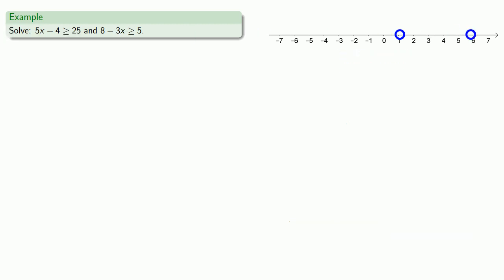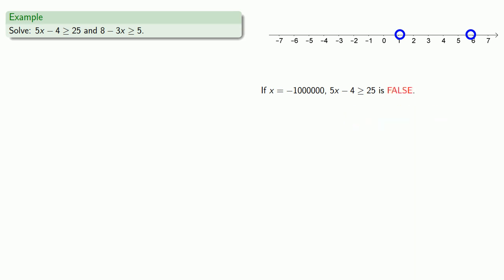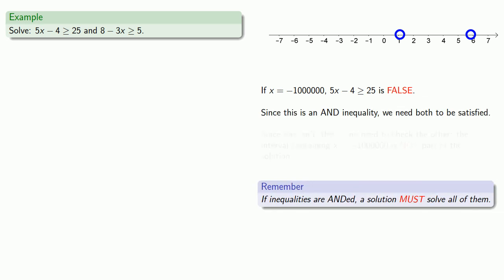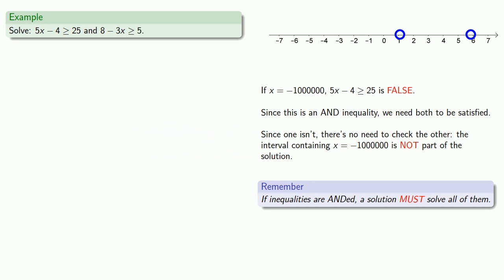So now we have two critical values and three intervals, so we'll check a test point in each interval. In our first interval, we try x equals negative 1 million. If x equals negative 1 million, then 5x minus 4 greater than or equal to 25 is false. Since this is an AND inequality, we need both inequalities to be satisfied. And since this first one isn't, there's no need to check the other. The interval containing x equals negative 1 million is not part of the solution.